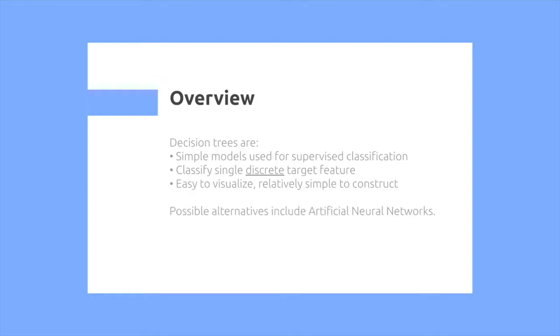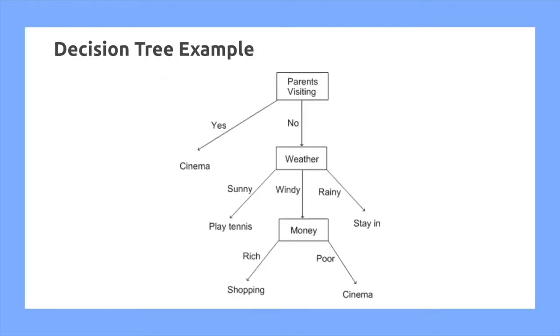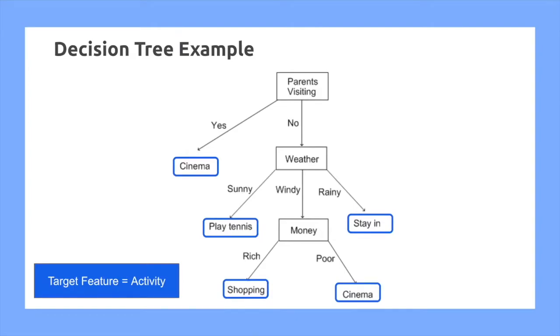A possible alternative to a decision tree includes artificial neural networks. So here's an example of a decision tree. Here I can see based off of a series of criteria what I'm going to be doing today. We notice that our target feature is in the leaf nodes.